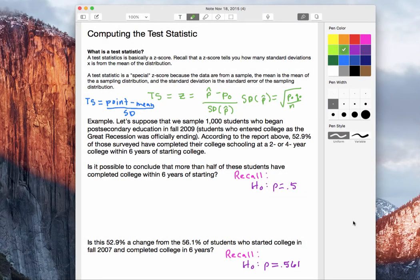In this video, we're going to learn how to compute the test statistic for a one sample proportion hypothesis test. In general, a test statistic is basically a z-score. In other sections, you'll learn that it's maybe called a t-score, but in this section with one proportion, it's called a z-score. Remember, when we learned about z-scores, it basically tells you how many standard deviations x, or a certain value, is from the mean of the distribution.